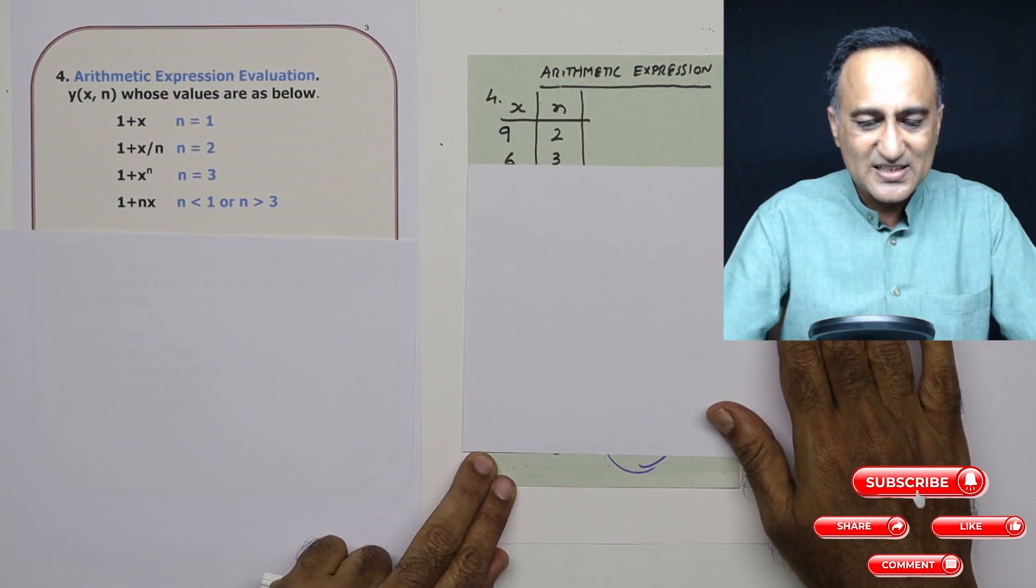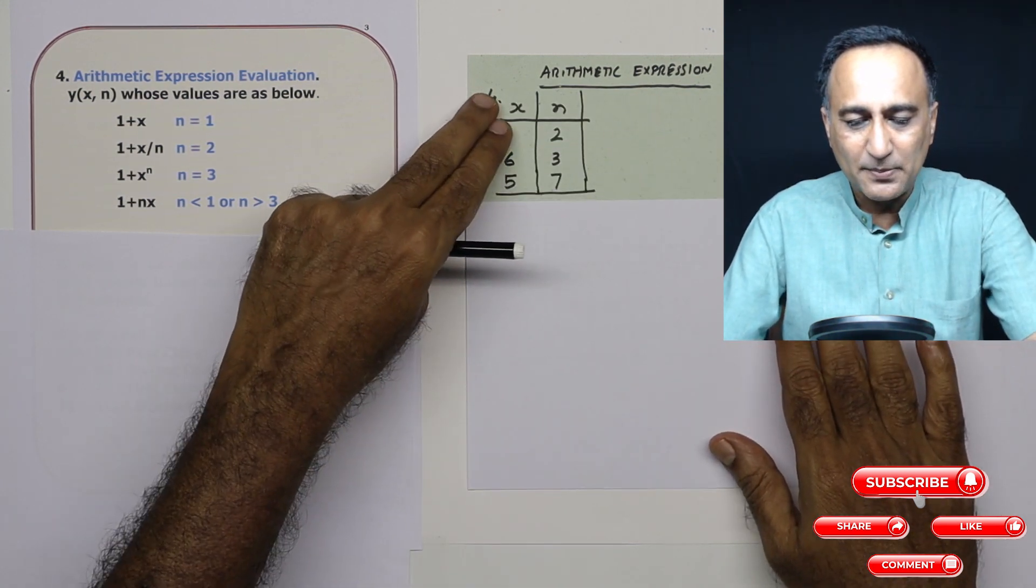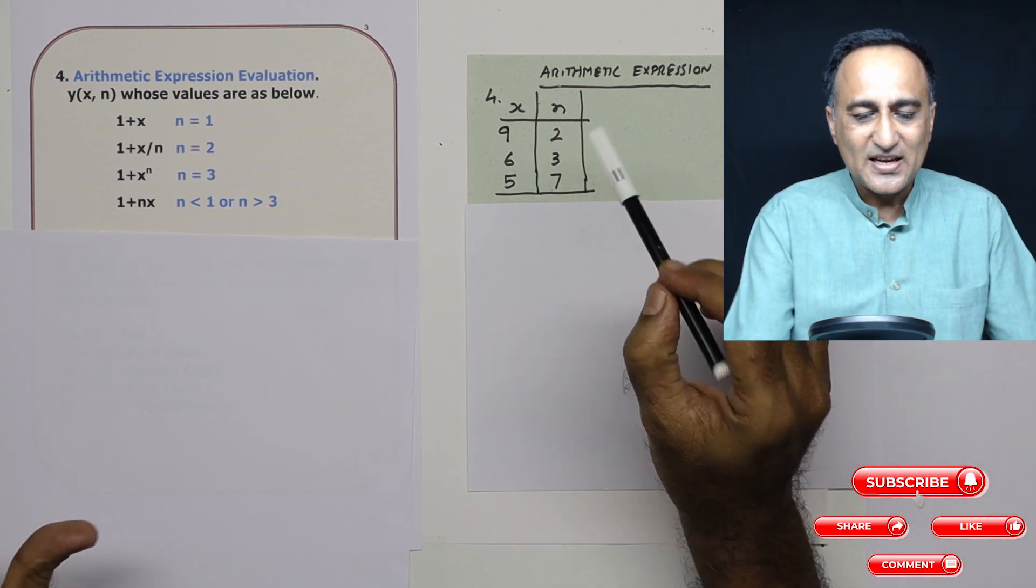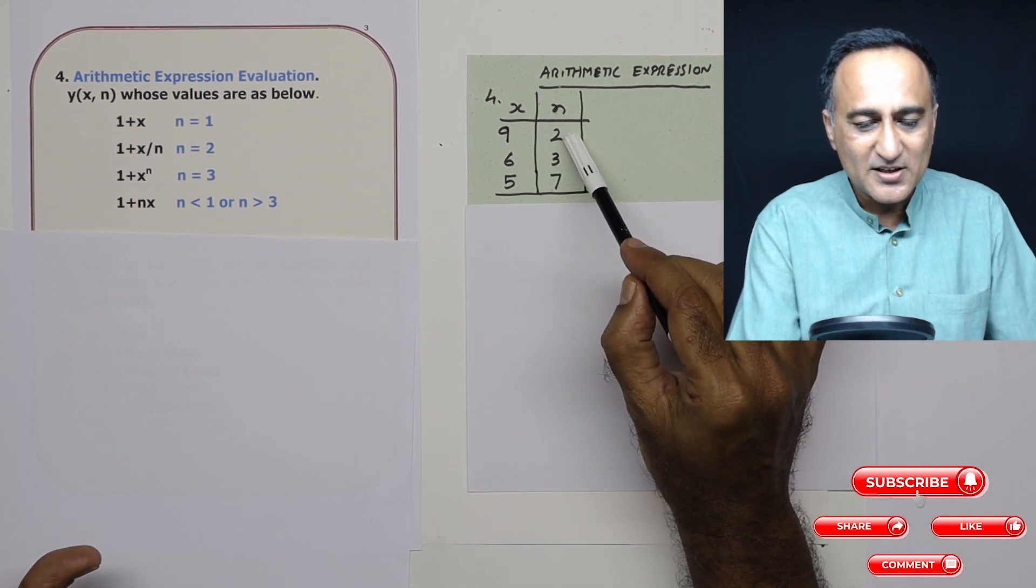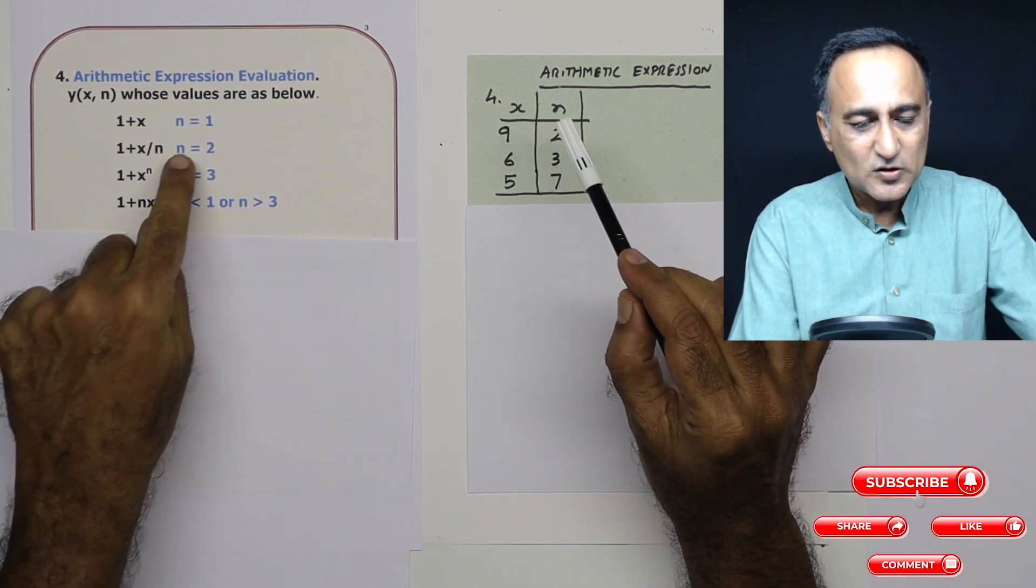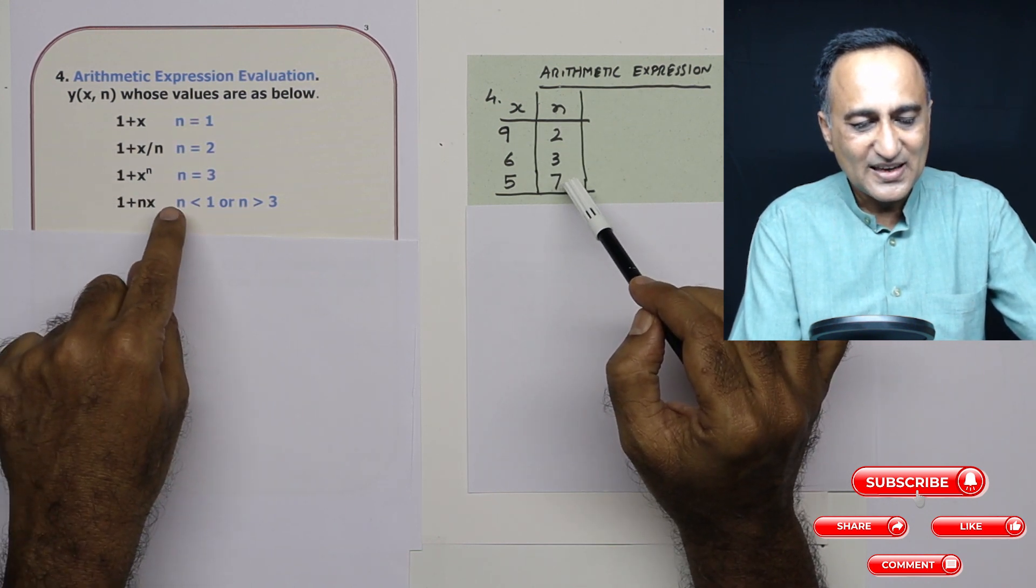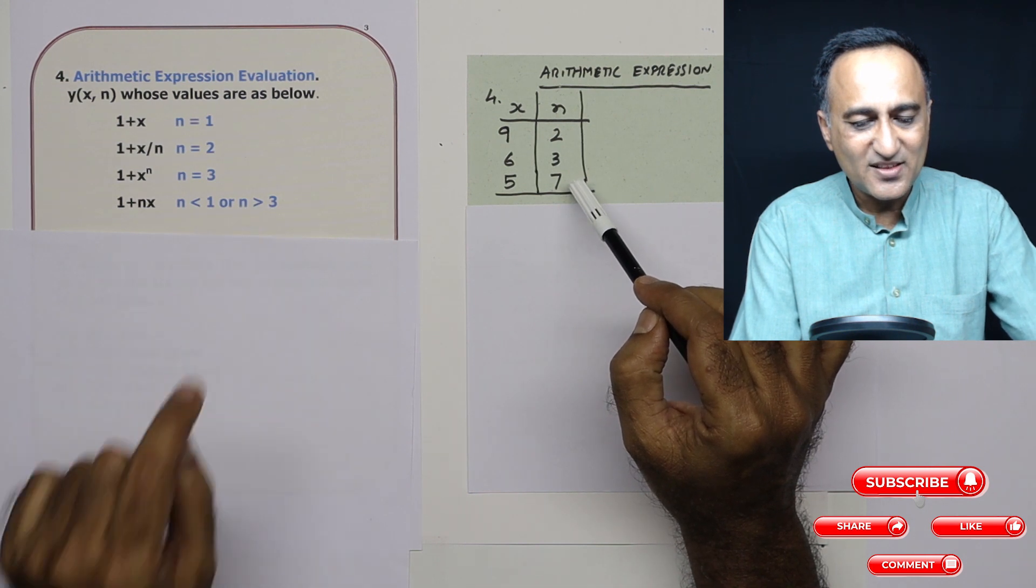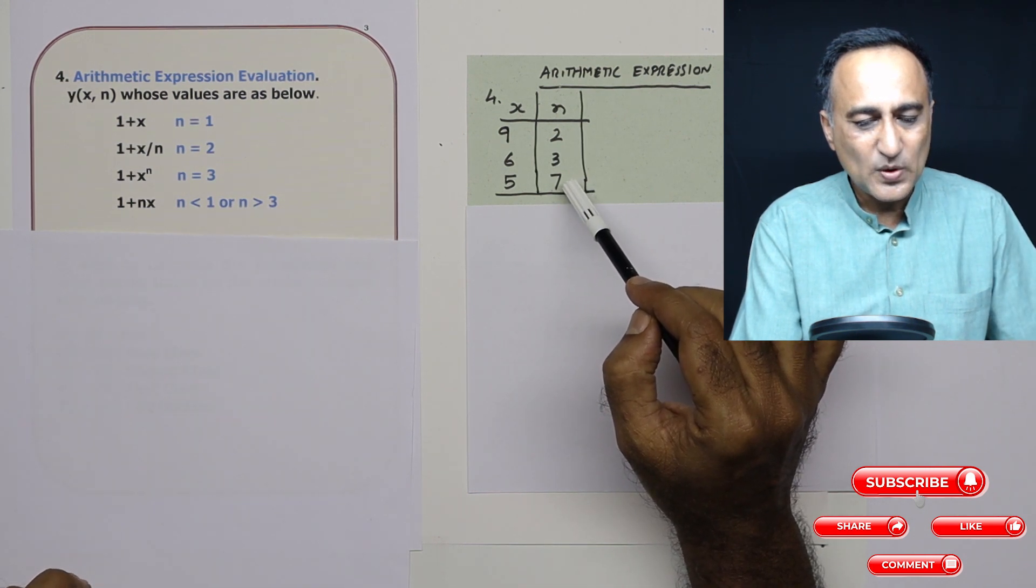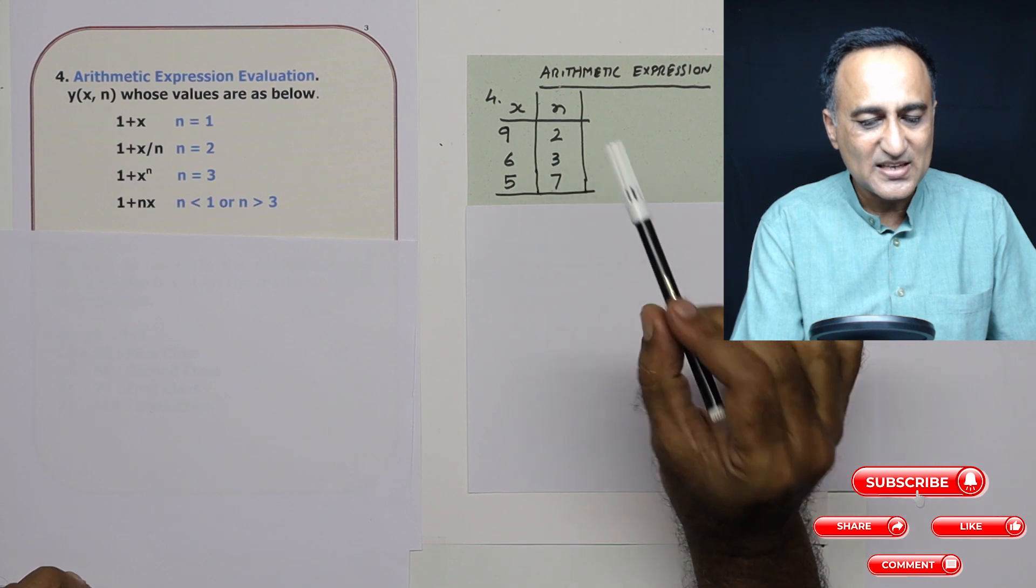So the best way to understand this is take a look at this sample table. Here what I have done is for different values of n, n is two, I have given x as nine. So n is two, this will come. N is three, this one will get evaluated. And here n is less than one or n is greater than three, that is when n is seven. In this case, n is seven.